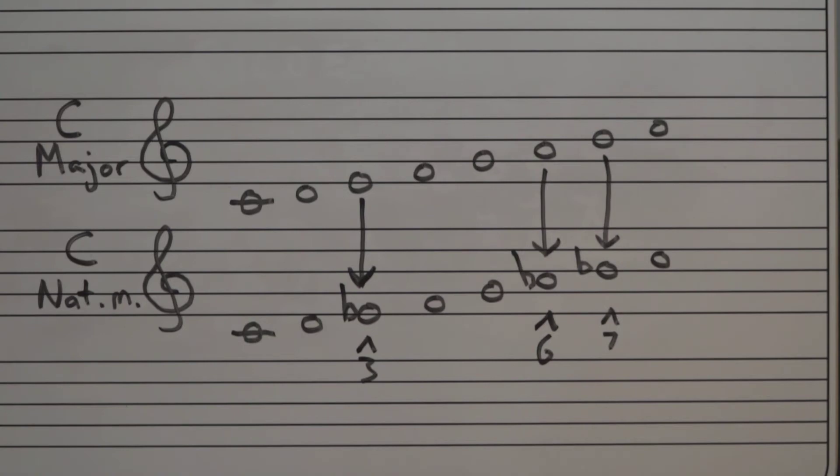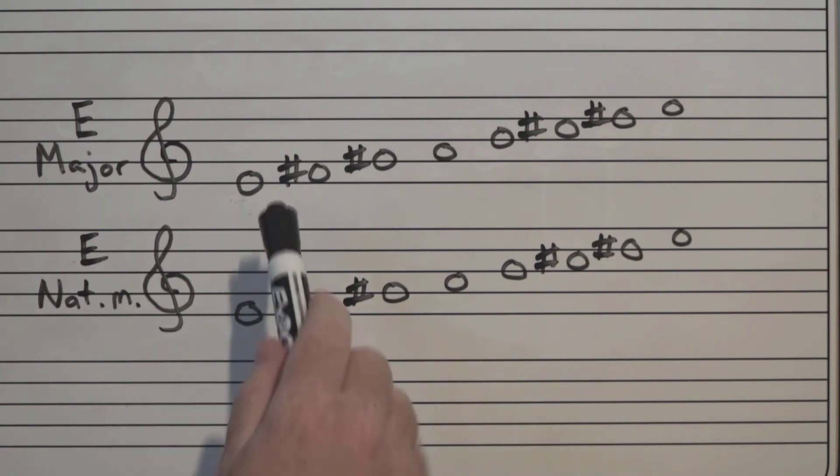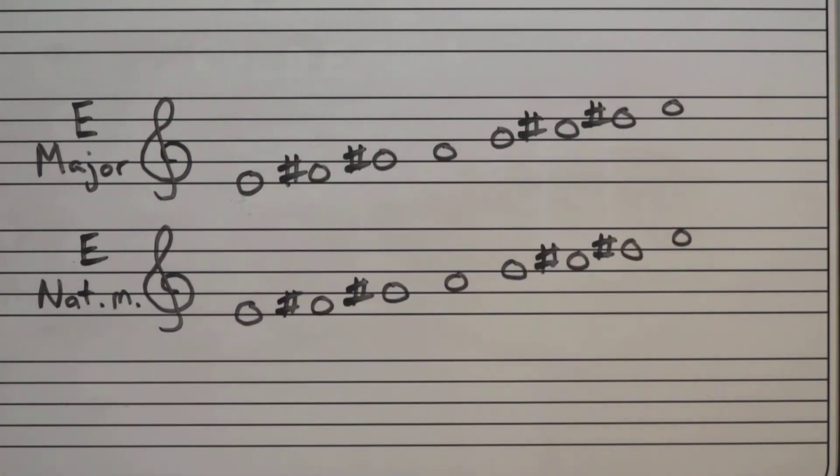Let's do it again with a different scale. Let's change our E major scale to the E natural minor scale. So we see that with E major, we have four sharps: F sharp, G sharp, C sharp, and D sharp.